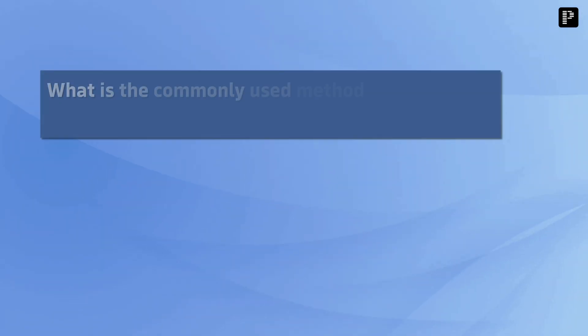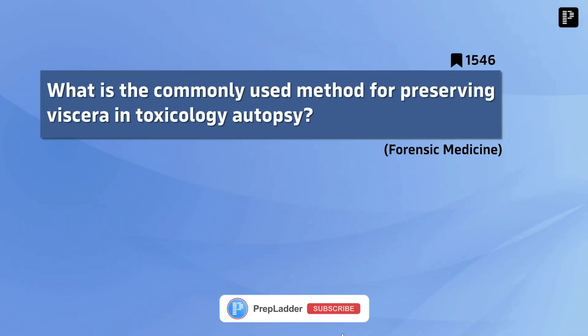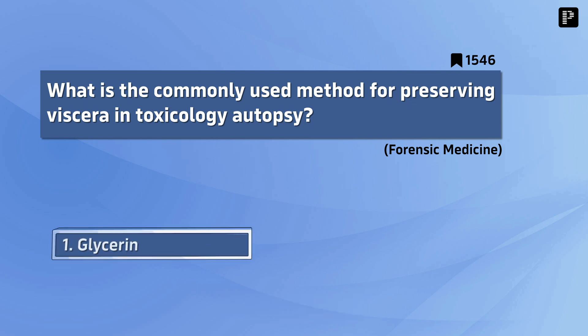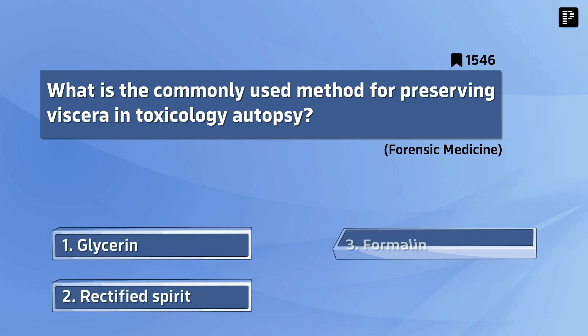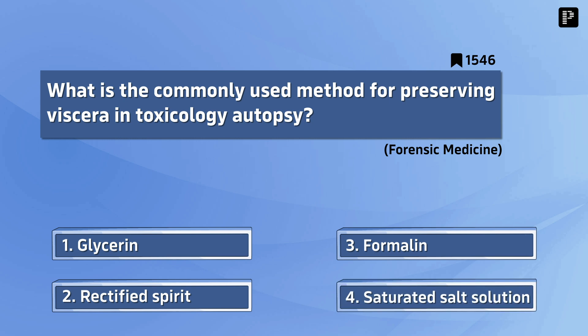Question 2: What is the commonly used method for preserving viscera in a toxicology autopsy? Your options are: glycerin, rectified spirit, formalin, saturated salt solution. And the correct answer is saturated salt solution.